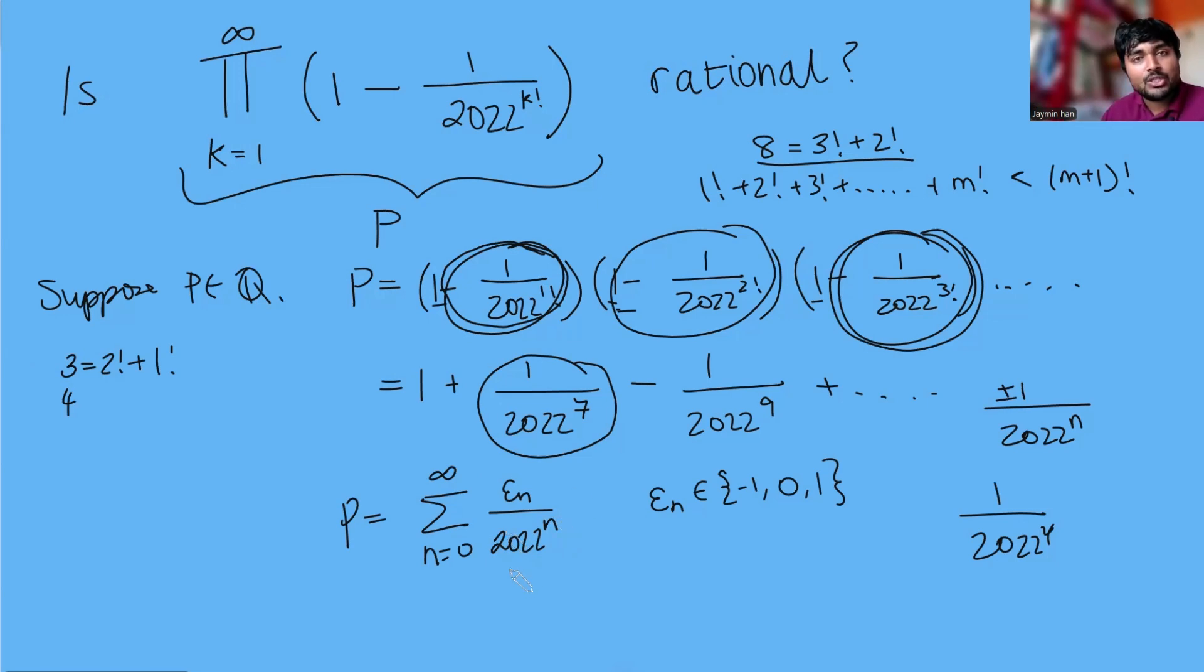This looks awfully similar to a geometric series so if we had the sum from n equals 0 to infinity of just 1 over 2022 to the n, you can just use the formula for this which is a divided by 1 minus r and this just turns out to be 2022 over 2021.